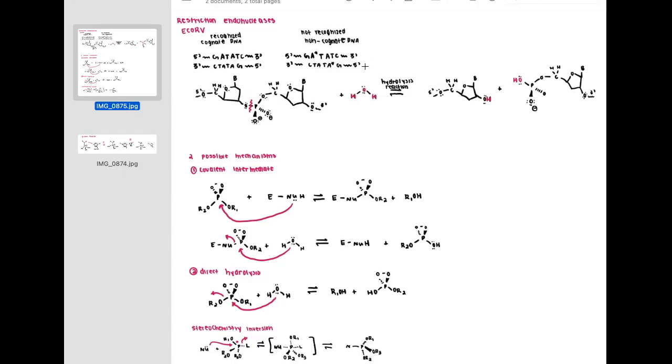EcoRV only actually cleaves foreign DNA, because the host DNA has adenines — shown with the asterisk here — that are methylated. The cognate DNA can be cleaved so that viral DNA can be recognized, allowing the host genome to be protected from viral infection.